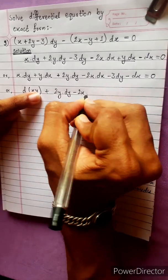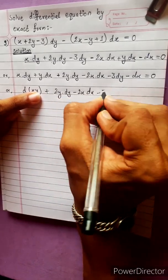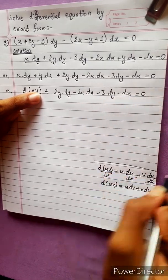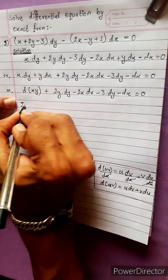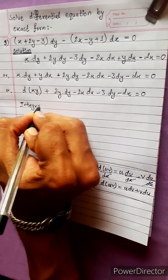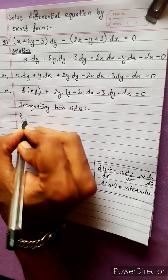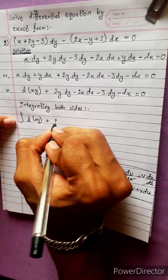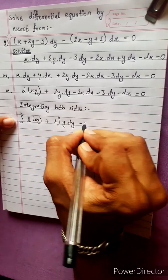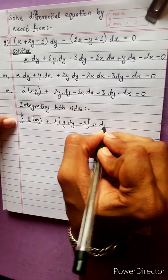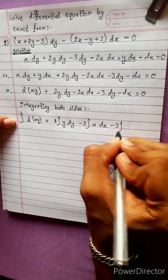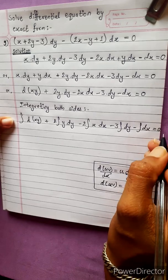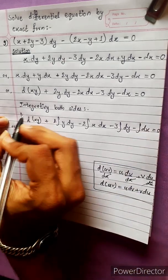So we have dy minus dx minus 3 dy minus dx equals to 0. Now let's integrate both sides — integrating both sides. This is the formula.